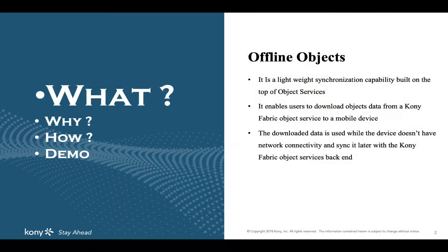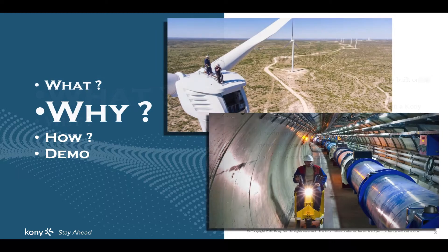So first, what is offline objects? Many of the apps that we use in our day to day life have offline capabilities — take Gmail, Twitter or WhatsApp. All work offline very well. Even if we don't have network connectivity, we can see Twitter feeds, read WhatsApp messages and check mails. Offline objects is a lightweight synchronization capability provided by Kony to make your app work offline.